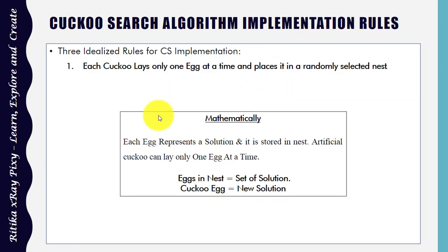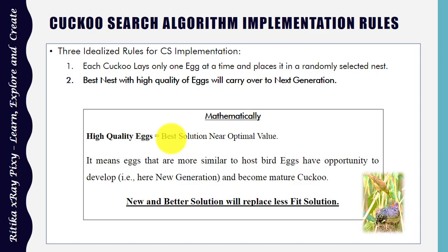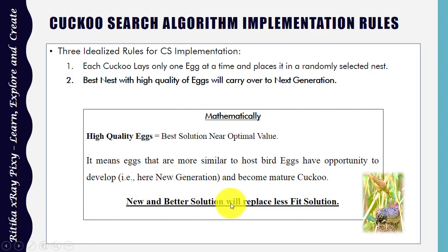Now we will convert these rules into a mathematical model. First rule: each cuckoo lays only one egg at a time and places it in a randomly selected nest. Here, each egg represents a solution stored in the nest, and the artificial cuckoo can lay only one egg at a time, so the egg in the nest is a set of solutions and the cuckoo egg is the new solution. Second rule: the best nest with the highest quality egg carries over to the next generation. High quality egg means the best solution near the optimal value. In order to calculate the fitness value, the new and better solution will replace the less fit solution.